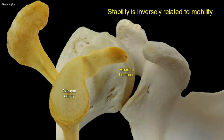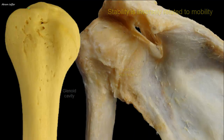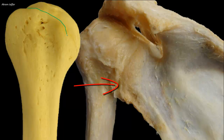Stability of a joint is usually inversely related to mobility. The capsule of the shoulder joint is attached to the anatomical neck, except medially, where it extends downward for about 2 cm on the medial side.